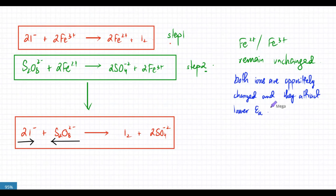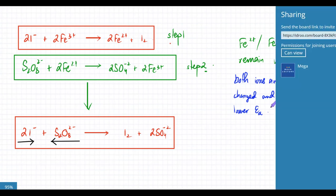Remember this specific example - it will come in your exams. Both ions being oppositely charged means they attract each other, hence activation energy is much lower with no repulsion. Let's continue tomorrow, and I'll try to send the notes and video lecture - you can click the link and the board will open up.